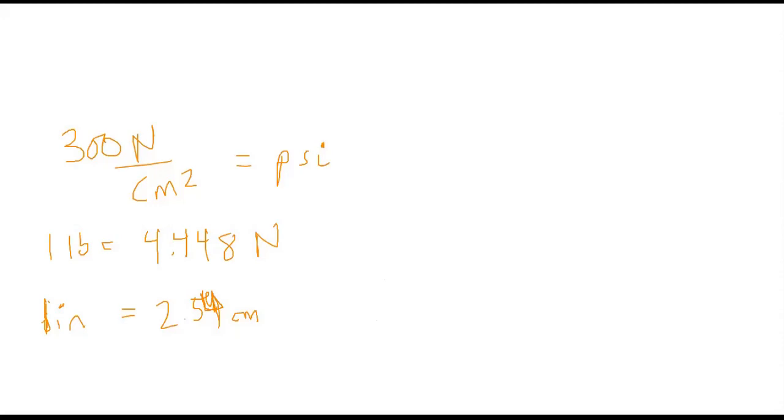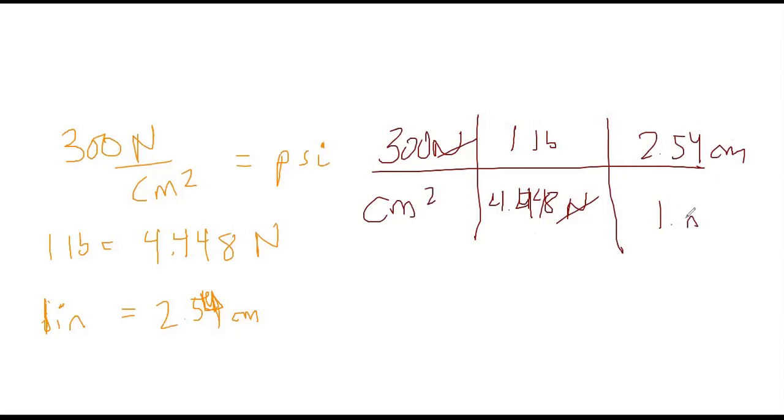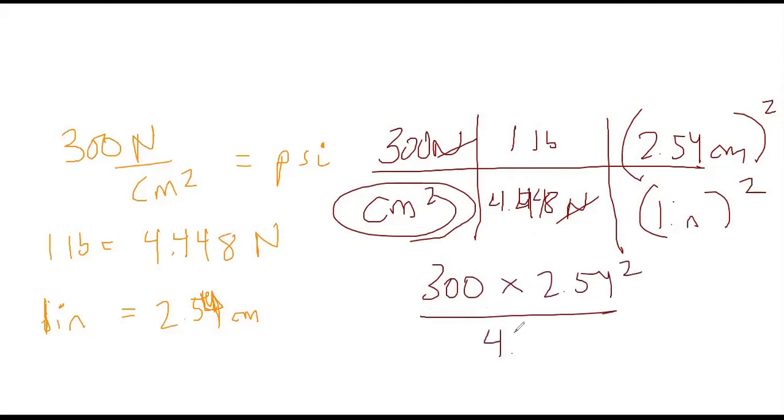Here we go, let me show you how this is done. 300 newtons over centimeters squared. Let's do the newtons first, that's easy. 4.448 newtons, one pound, so the newtons cancel. We're left with pounds. And then we have 2.54 centimeters in one inch. We have centimeters squared here, so what we have to do is we have to square this. So you have 300 times 2.54 squared over 4.448.